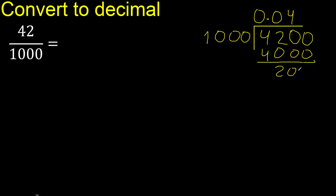Subtract 200. There is no number that goes down, therefore complete. Always complete with 0. Point.